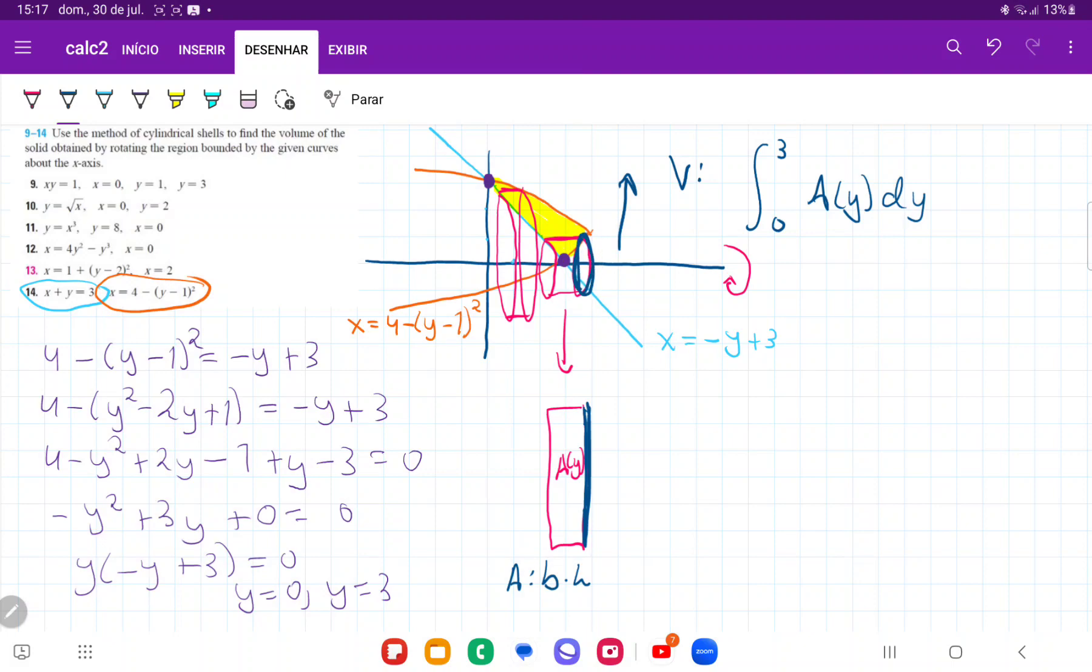And this height here is going to be the equivalent of this circumference. Because when we cut it open, that's going to be like the longest part. And the circumference of any circle is just given by 2πr.